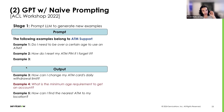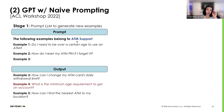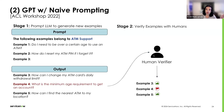Not all examples generated by GPT are necessarily correct. For instance, example four — 'What is the minimum age requirement to get an account?' — is not part of the ATM support class; it belongs to the age limit class. To resolve this, we can have a human in the loop who quickly checks these examples and decides which ones to accept and which to reject.